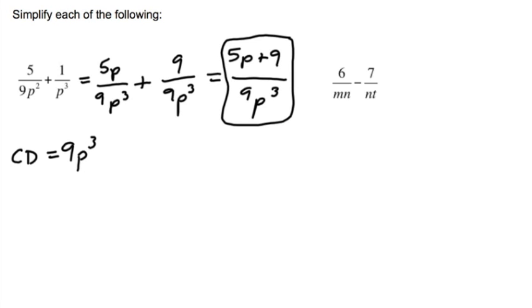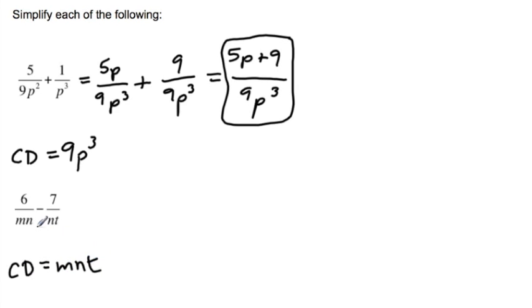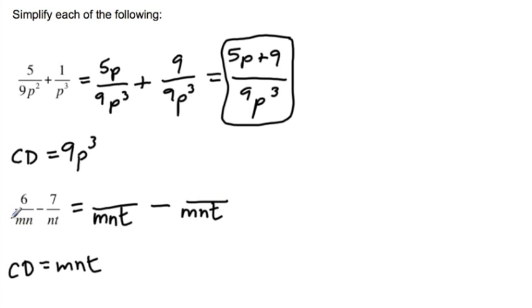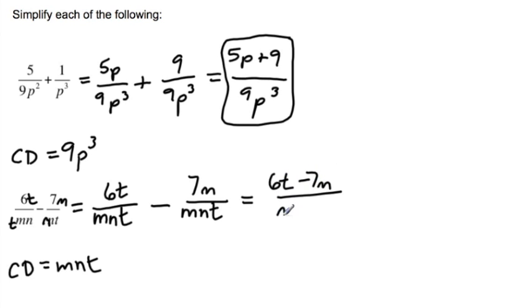If you want to try the next one on your own you can, otherwise watch along. Looking at the common denominator, I see it's going to be m times n times t — because in my first fraction I have m times n, and in my second fraction I have n times t. To change to that common denominator: for the first fraction, I multiply mn by t, so I multiply the numerator to get 6t. For the second fraction, I multiply by m to get 7m. My simplified answer is six-t minus seven-m over m-n-t.